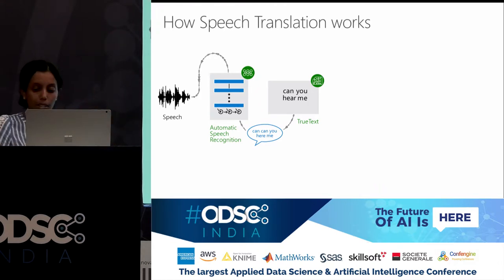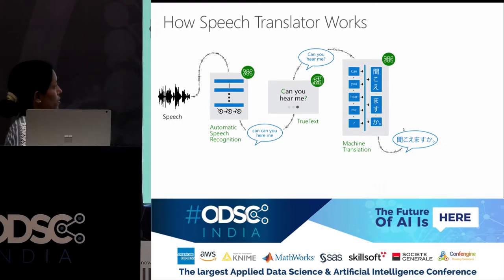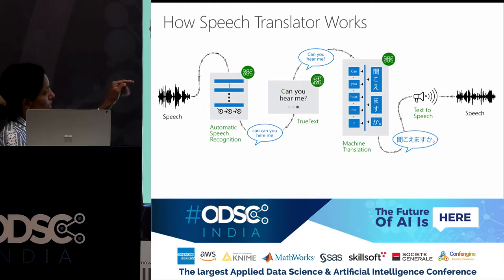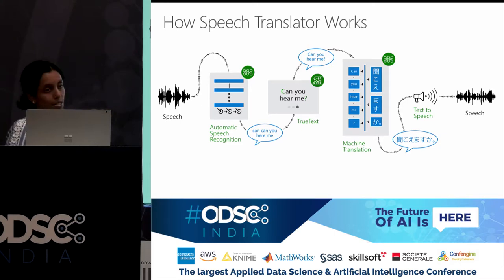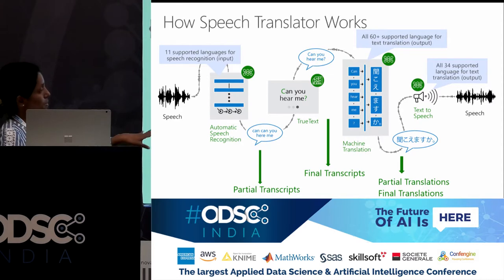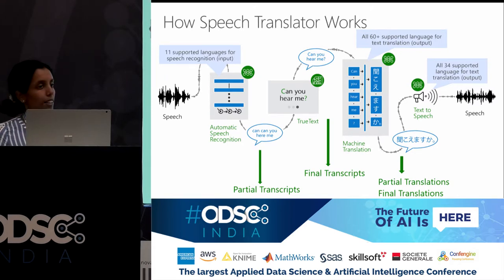Now that the transcript is ready, we send it for machine translation. It gets into machine translation — in this case, we're trying to translate text from English to Chinese. The Translator API uses NMT and does the translation. Finally, you can use text-to-speech to convert this text into speech in Chinese and give it to the customer. During the entire process, partial transcripts, final transcripts, as well as translations are available in case we need to use them for something else. The number of languages supported keeps increasing.